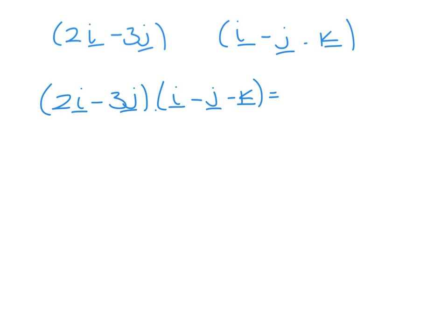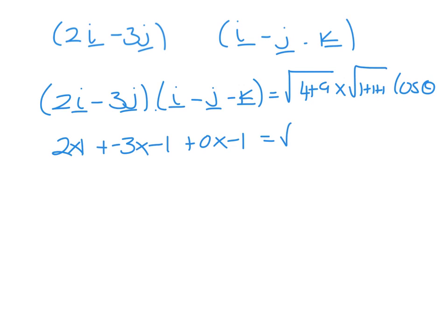Which is equal to the magnitude of the first times the magnitude of the second cosine of the angle between them. On the left-hand side, we have 2 times 1, minus 3 times minus 1, and 0 times minus 1, which equals root 13 times root 3, cosine theta.